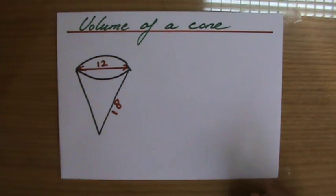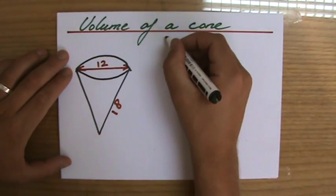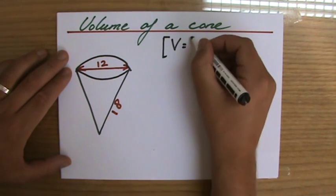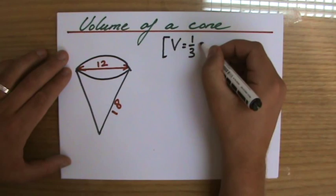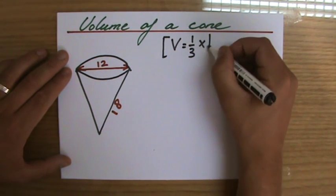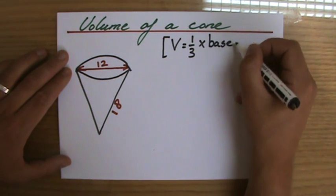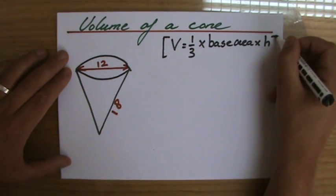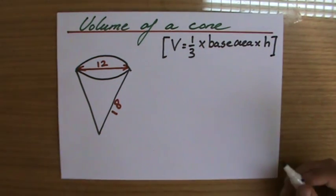They're asking me what is the volume of a cone, and in these questions they will always give you the formula. The volume of a cone can be found by doing one-third times base area times the height h.